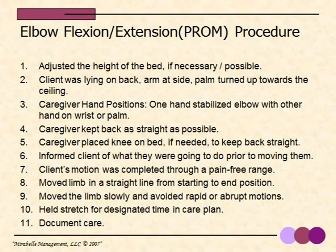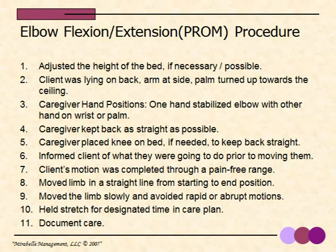Let's review the step-by-step procedure for elbow flexion and extension. One: adjust the height of the bed if necessary. Two: client lying on their back, arm at side, palm turned upward toward the ceiling. Three: caregiver hand positions — one hand stabilizes the elbow, the other on the wrist or palm. Four: caregiver kept back as straight as possible. Five: caregiver placed knee on bed if needed. Six: inform the client prior to moving them. Seven: motion completed through a pain-free range. Eight: move the limb in a straight line. Nine: move slowly, avoid rapid or abrupt motions. Ten: hold for the designated time. Eleven: document your care.